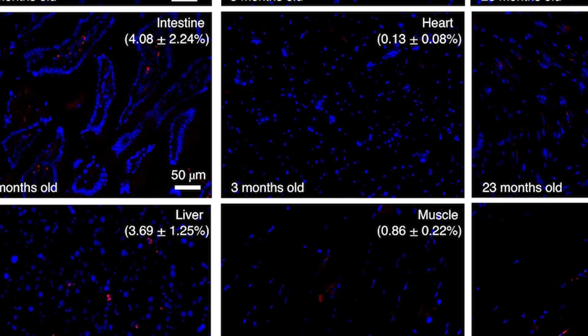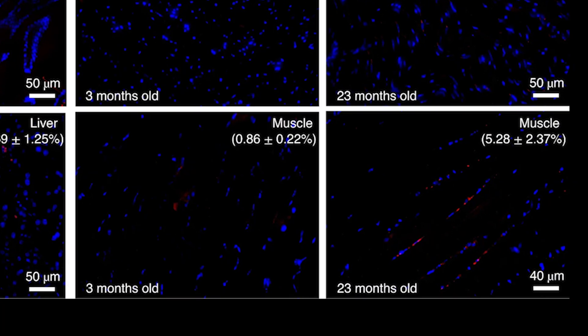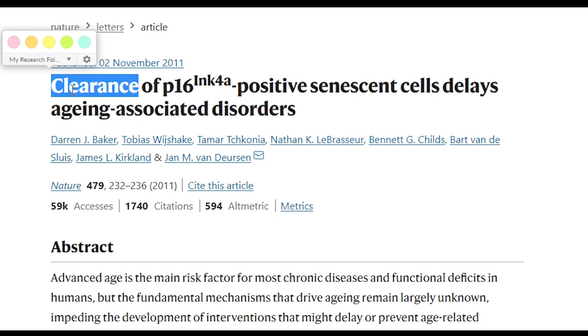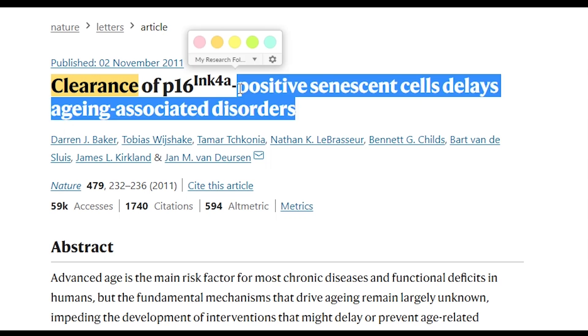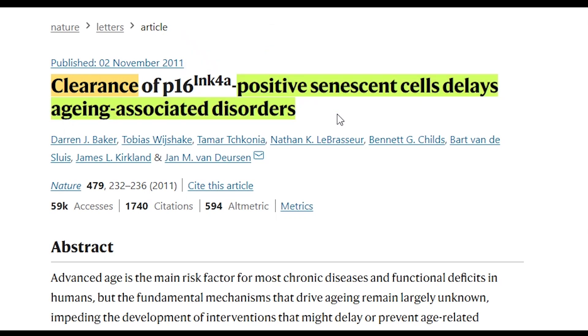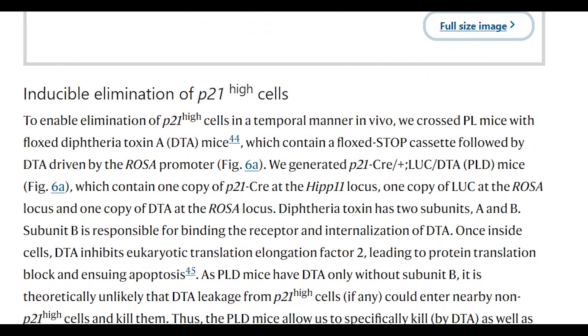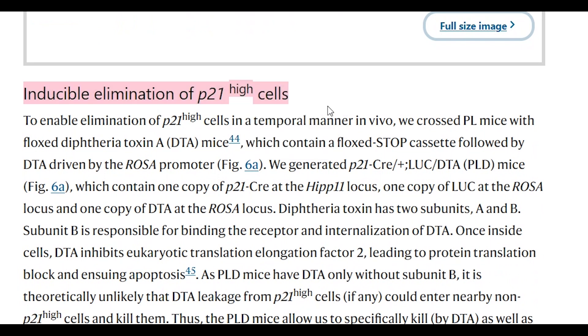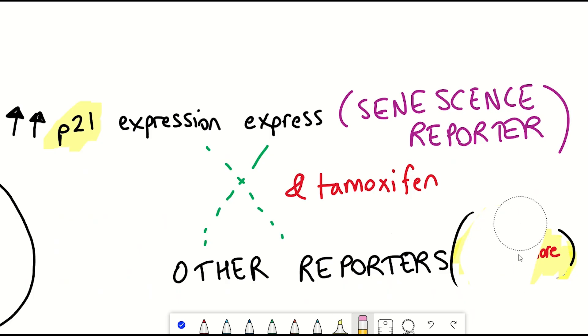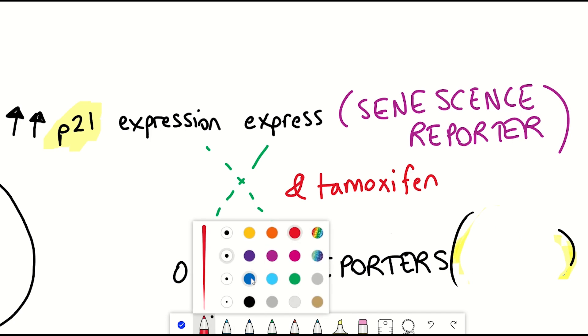So in previous research papers using high P16 expression to detect senescent cells, they showed that clearance of these senescent cells delays aging-associated disorders. So the authors of this recent publication were interested in seeing what would happen if you got rid of the P21 high-expressing cells. So to do this, they crossed their mouse reporter to a different reporter that meant effectively that when the mice now were given tamoxifen, it killed any of the cells that had high expression of P21.